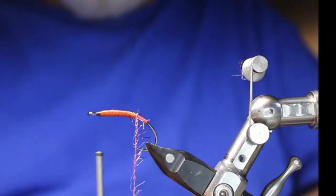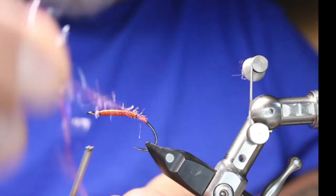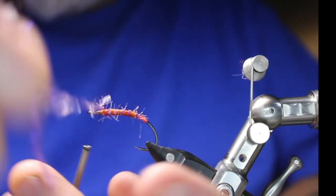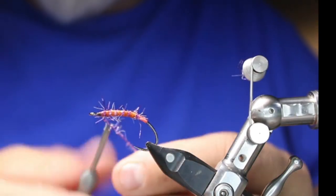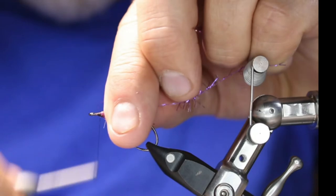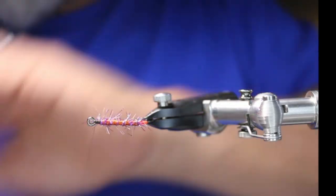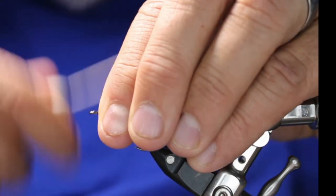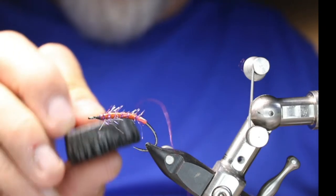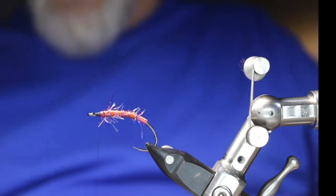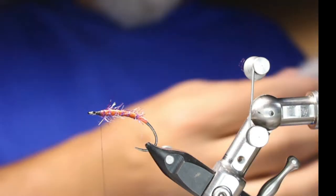Take my string and I just do one full wrap right at the butt, and then I open it up and I'm going to rib it forward, palmer it forward. One full wrap there. Hold it all back. Okay, so now it's important to wax. At this point, stuff starts getting slippery, and I really like waxing it fairly heavy.